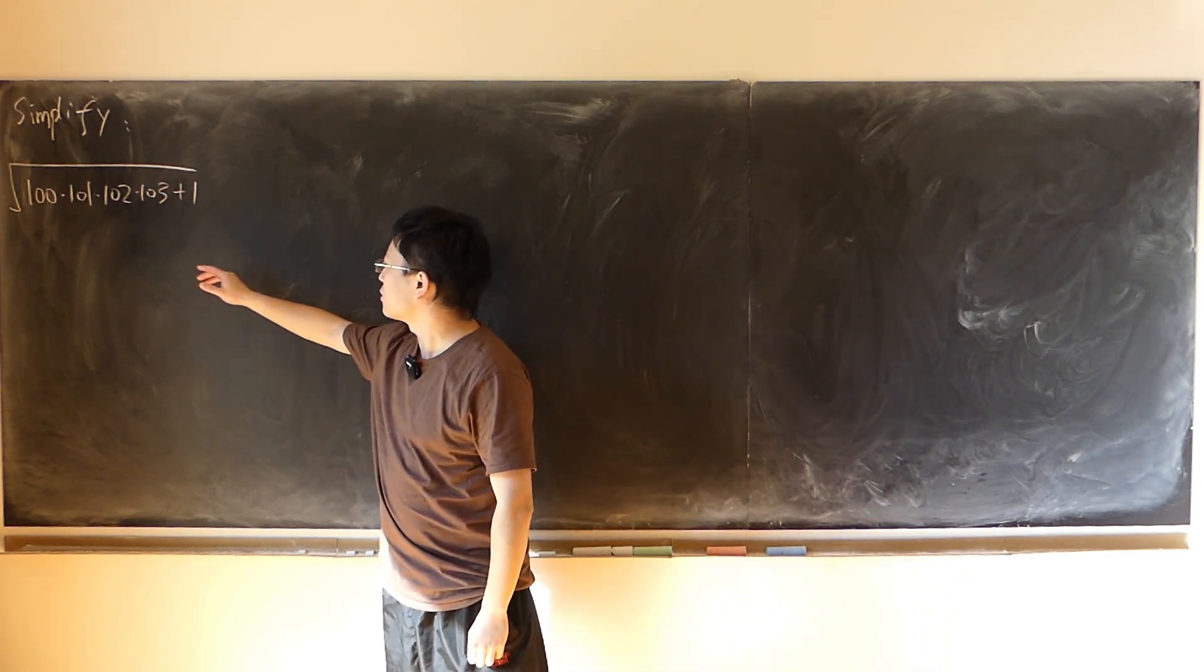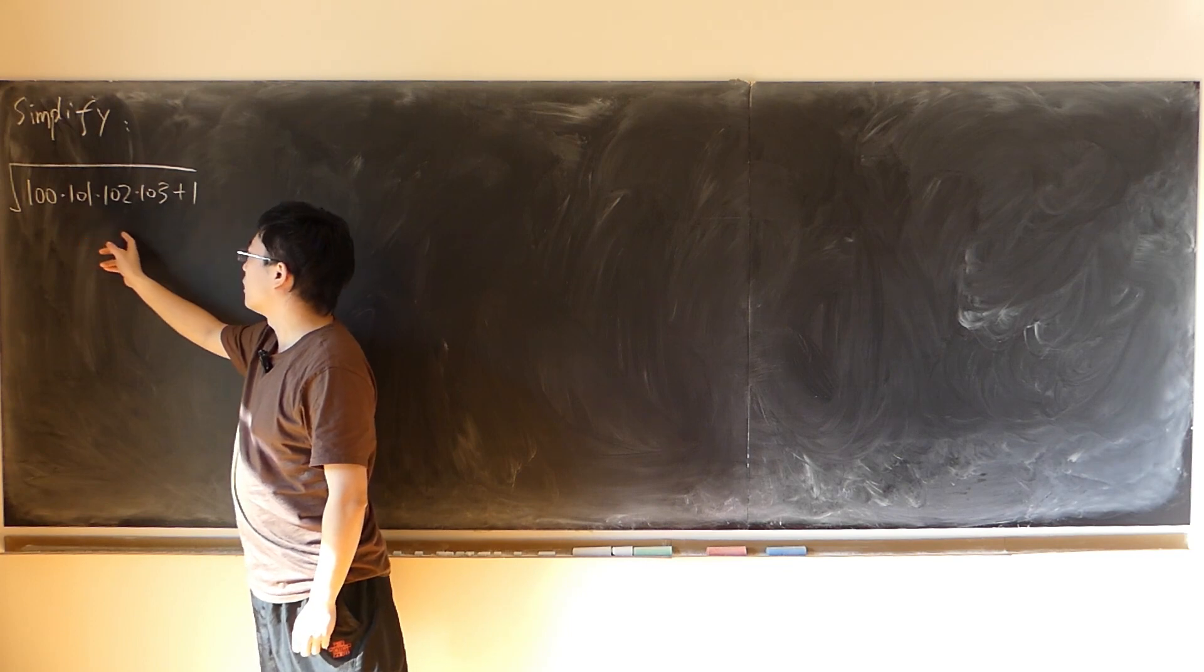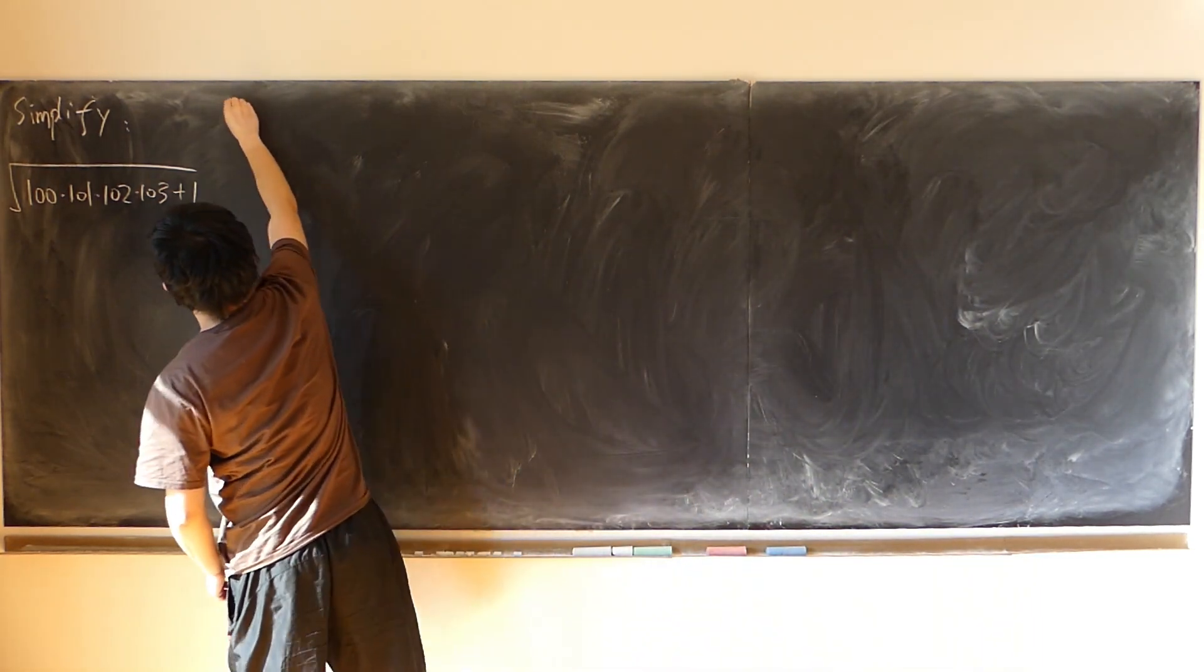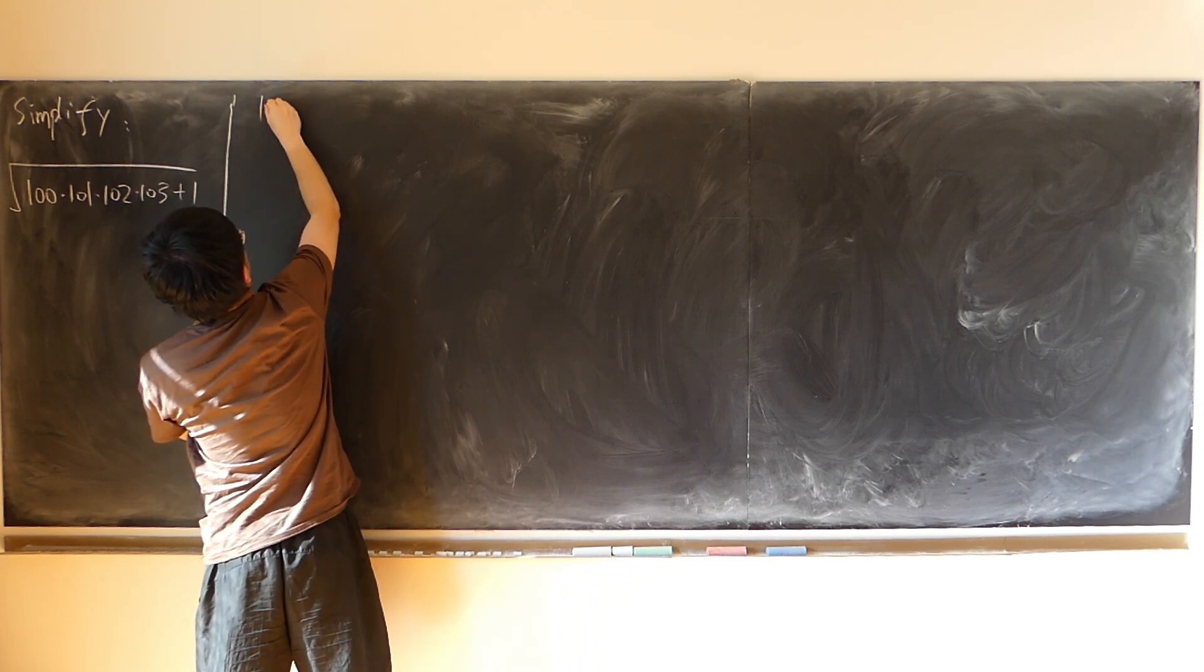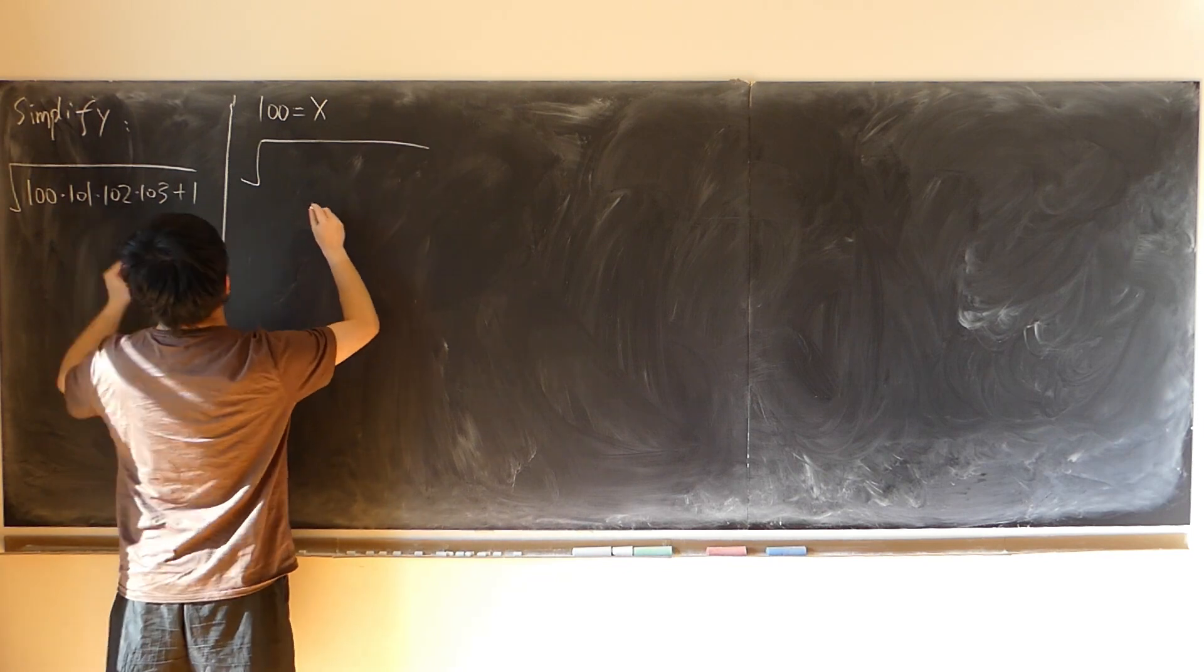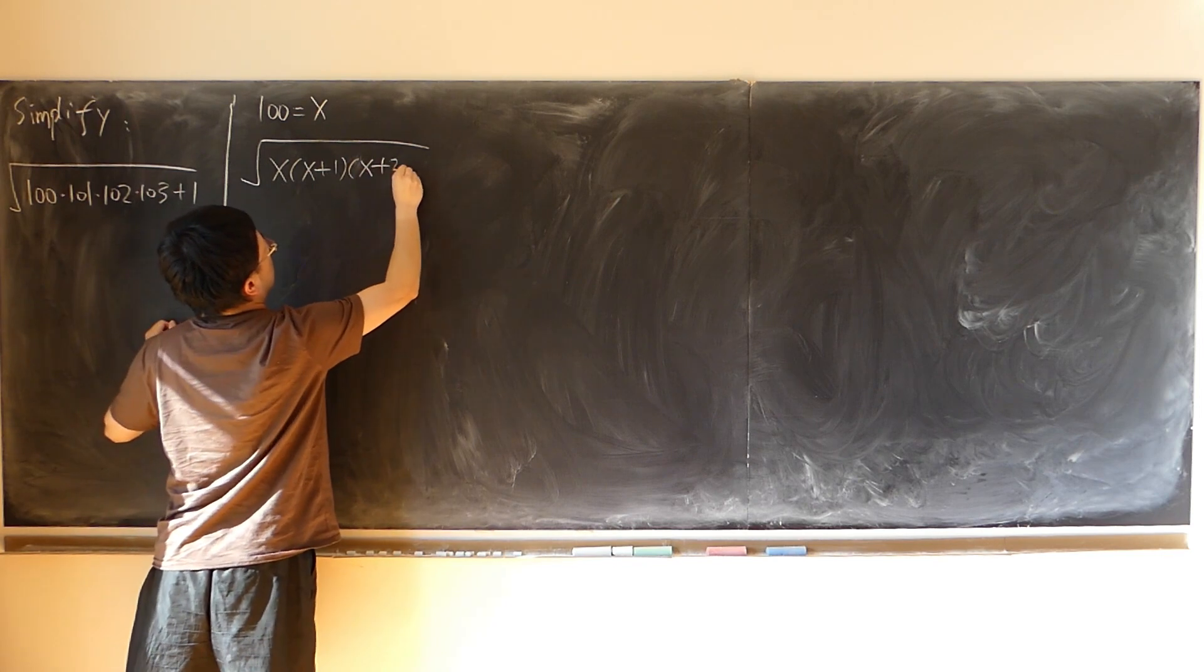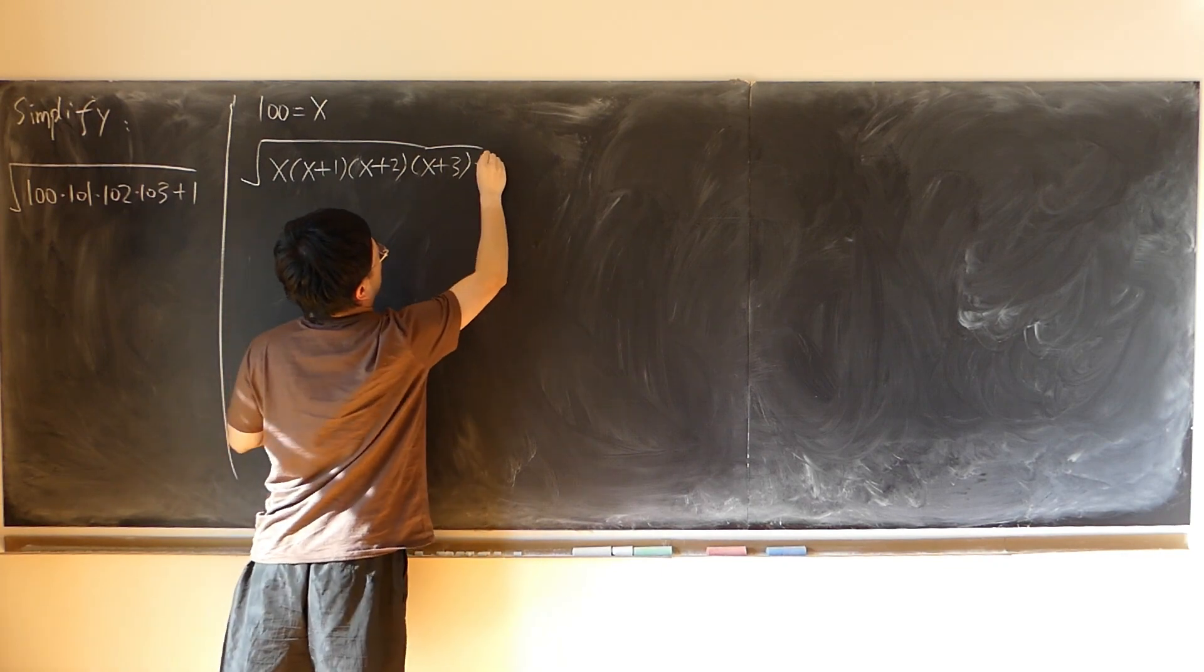How to simplify this expression: the square root of 100 times 101 times 102 times 103 plus 1, without using a calculator. First, let me use the substitution 100 equals x. So the original expression becomes x times x plus 1 times x plus 2 times x plus 3, then plus 1.